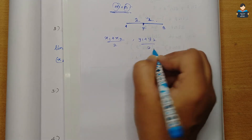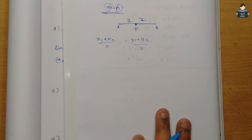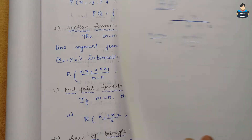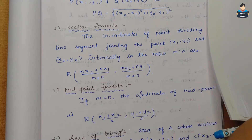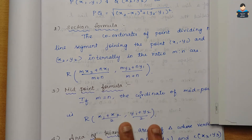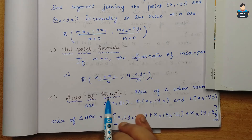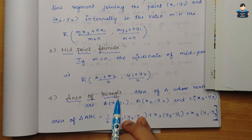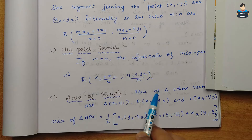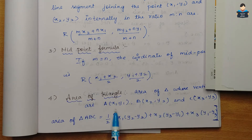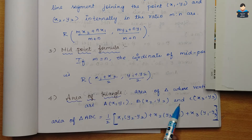Next is the Area of a Triangle. The area of a triangle with vertices A, B, C is calculated using the coordinates of those vertices.